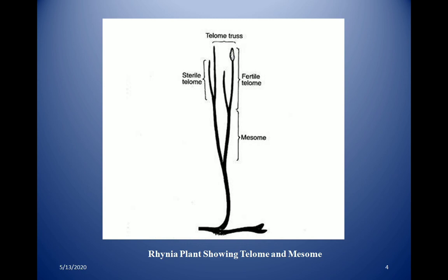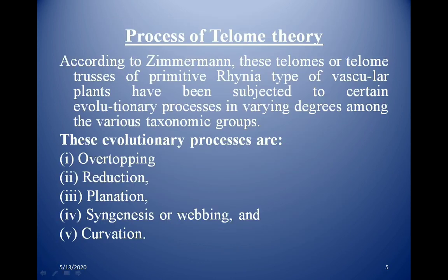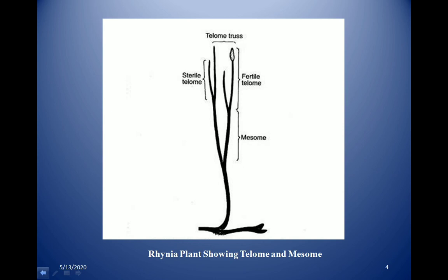This figure clarifies what we studied in the previous slide. You can clearly see that in figure one, the tip not terminated by a sporangium is termed a sterile telome, and the tip terminated by a sporangium is known as a fertile telome. When fertile or sterile telomes group together they form a telome truss, and the connecting axis is termed a mesome. This is a figure of a simple rhynia plant showing telomes and mesomes.